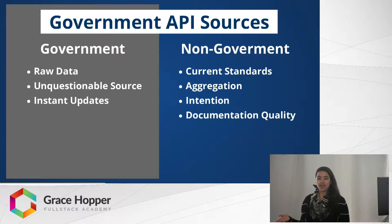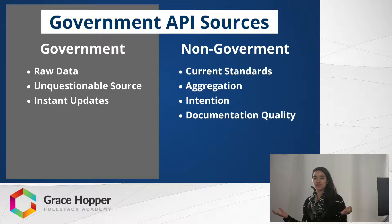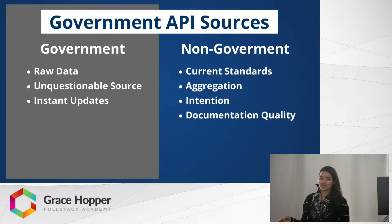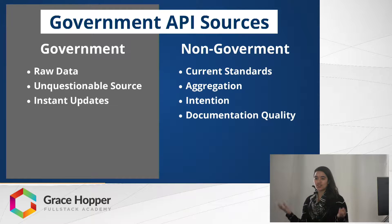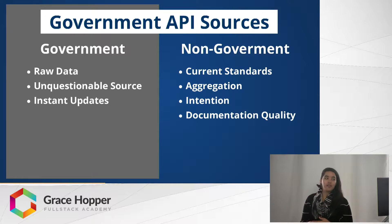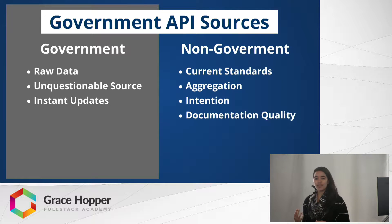With the non-government API, the data might be changed in some way, but you might like that. It might be an aggregation of a lot of different data or data from a lot of different sources. It could also have extra information — they might do summaries or something to take a lot of complicated data and boil it down for you. There's also the format, which could be in a more desirable format.